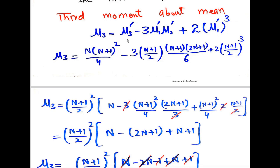Where μ₃′, μ₁′, and μ₂′ are already proven: μ₃′ = N(n+1)²/4, minus 3 times μ₁′ = (n+1)/2, times μ₂′ = (n+1)(2n+1)/6, plus 2 times μ₁′ = (n+1)/2 whole power 3.